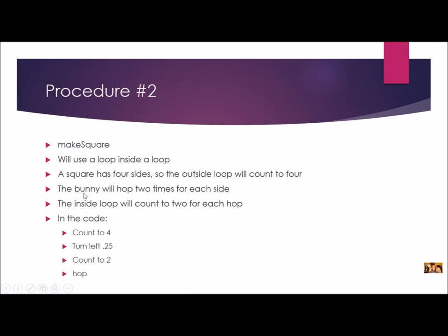For procedure number two, we're going to call it makeSquare and use a loop inside a loop. A square has four sides, so the outside loop will count to four. The bunny will hop two times for each side, so the inside loop counts two for each hop. In the code: count to four, turn left a quarter turn — because the square goes 90 degrees — then count two, and inside call hop. Let's give it a try.